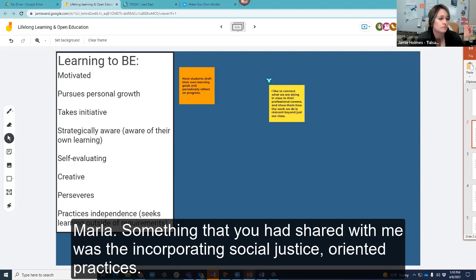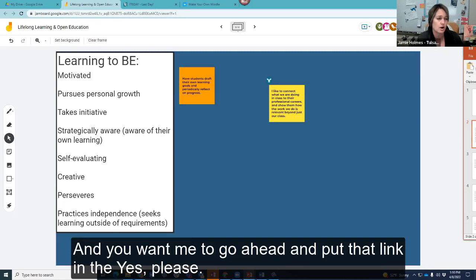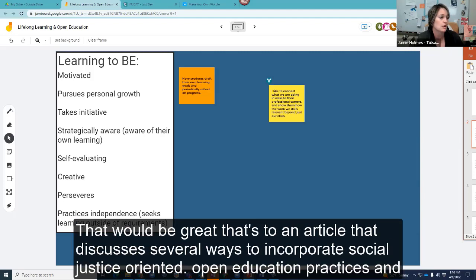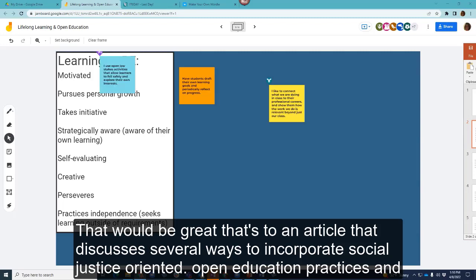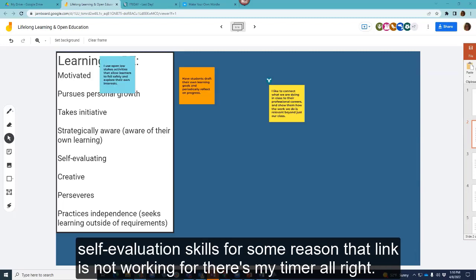Marla, something that you had shared with me was the incorporating social justice oriented practices. And do you want me to go ahead and put that link in? Yes, please, that would be great. That's to an article that discusses several ways to incorporate social justice oriented open education practices. And a lot of those could help students pursue personal growth, take initiative, and develop self-evaluation skills.